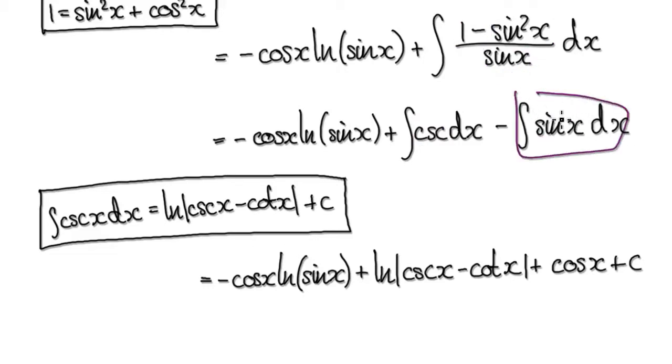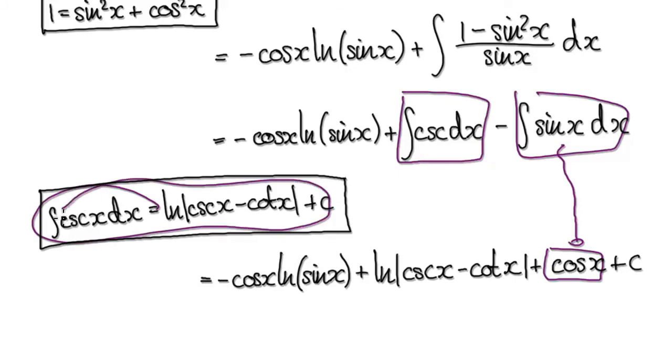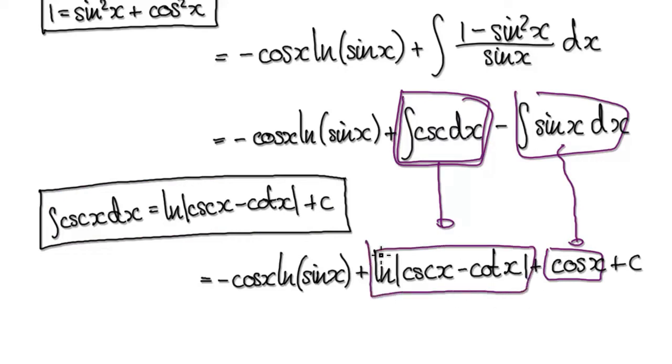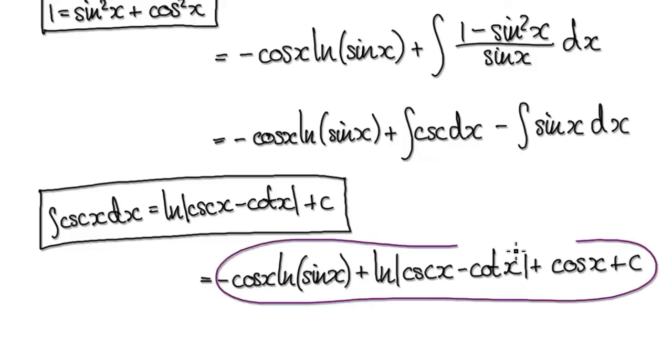This should be easy to integrate. Integrate this will give you cos. And then this thing here, we've done this before, so I'm asking you to be able to accept this. So when you integrate this, it will then give you this thing here. And then this thing here is what we had earlier. So your final answer would be this.